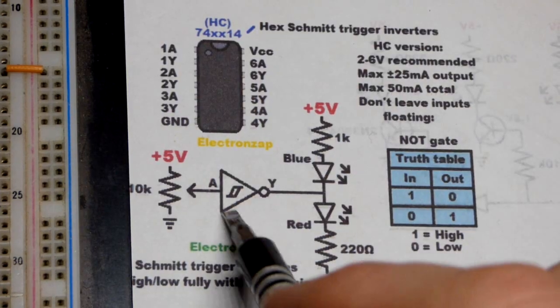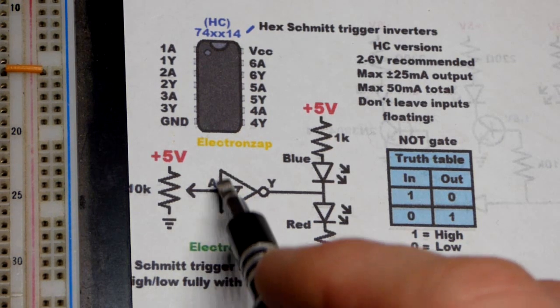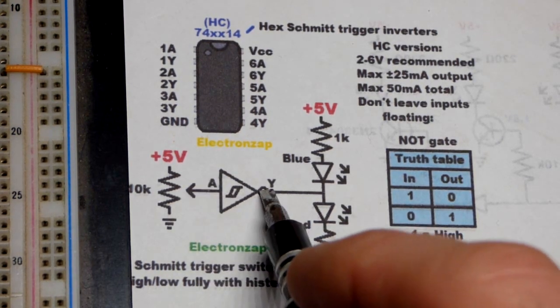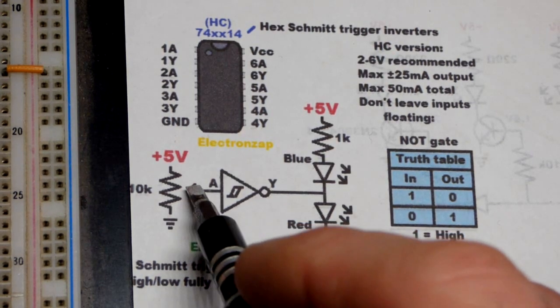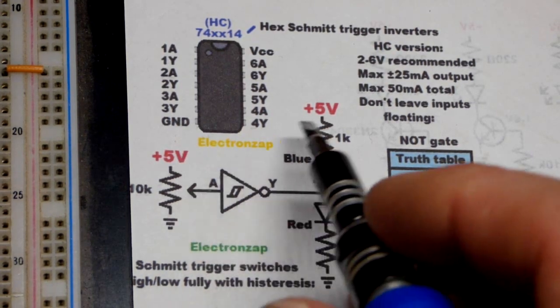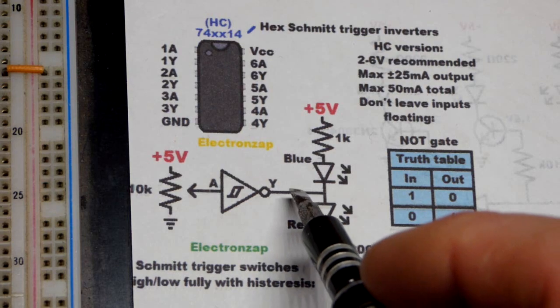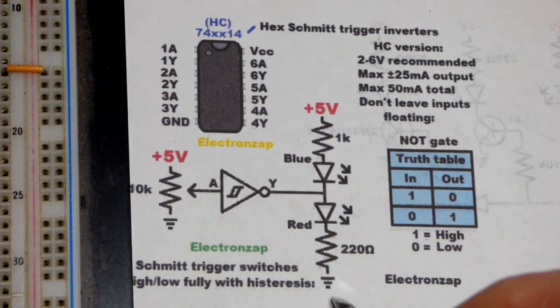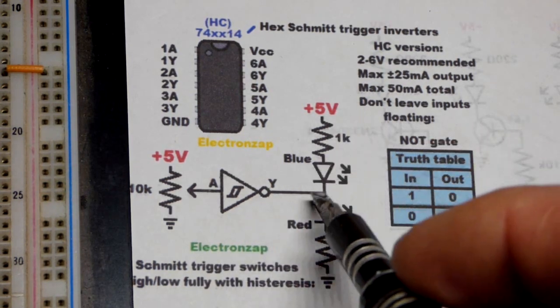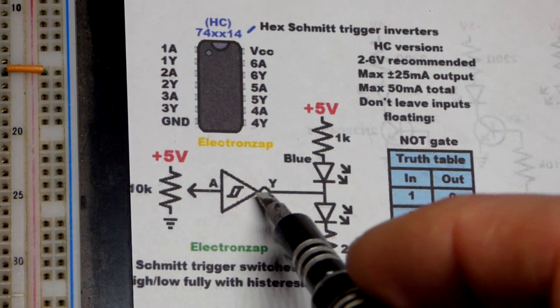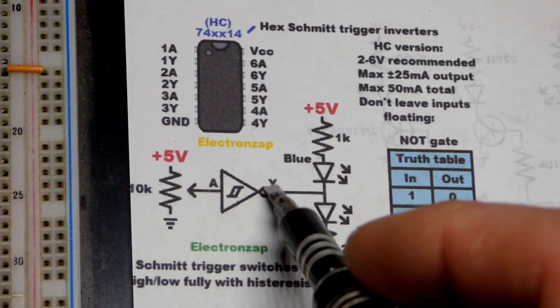So focusing on the schematic diagram that I drew here, we have a triangle there without the dot. That would be a buffer. So Schmitt trigger buffer would be, you know, high enough voltage in, you would have a high voltage out, as high as the output can go, red LED would light up. But we have this dot here.